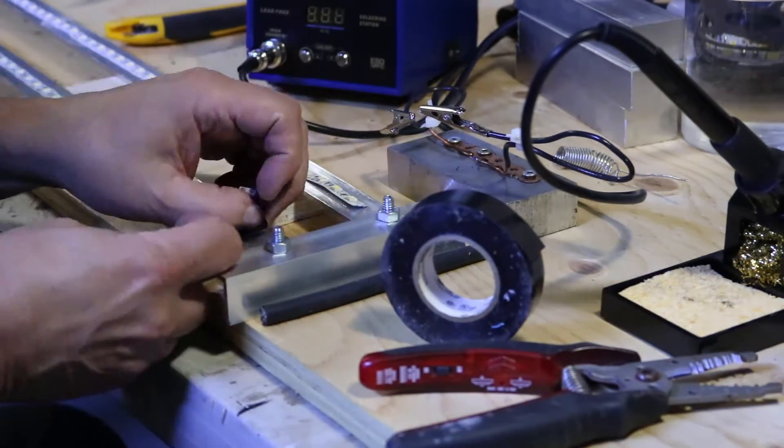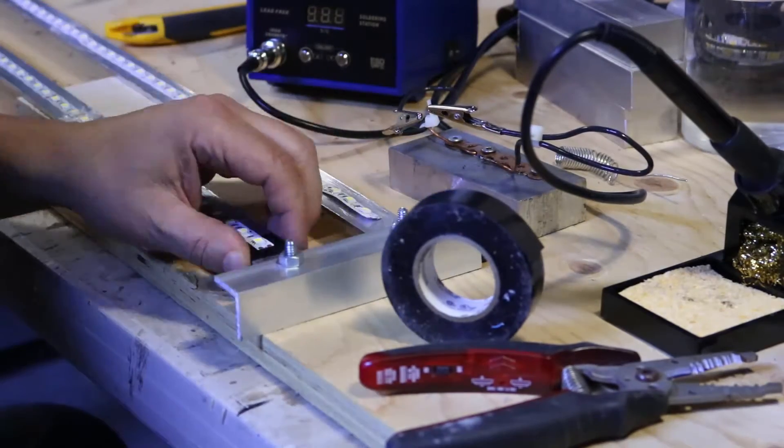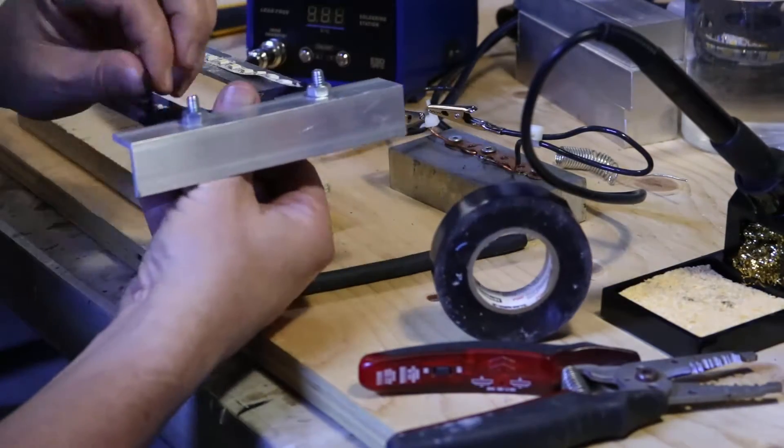To give myself a little bit of added electrical security, I don't think this stuff can really short out that easily, but I just put a little electrical tape underneath the aluminum just to separate the tape from the aluminum.